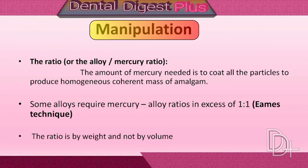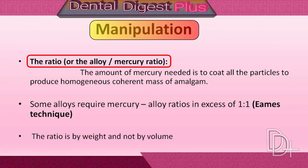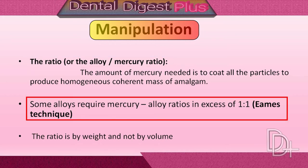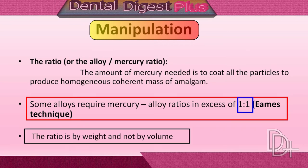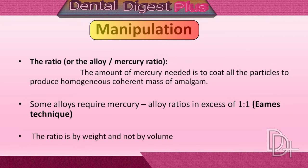Manipulation of Dental Amalgam. Correct proportioning of alloy and mercury is essential for forming a suitable mass of amalgam. Some alloys require mercury-alloy ratios in excess of 1:1, whereas others use ratios of less than 1:1, with the percentage of mercury varying from 43% to 54%.